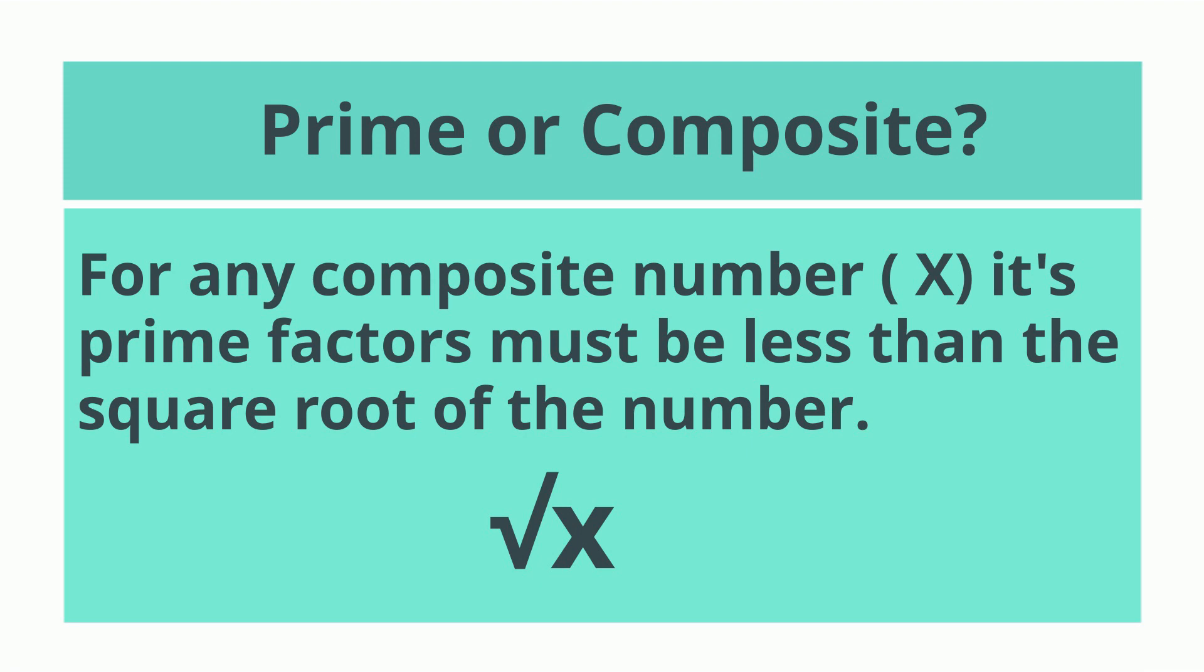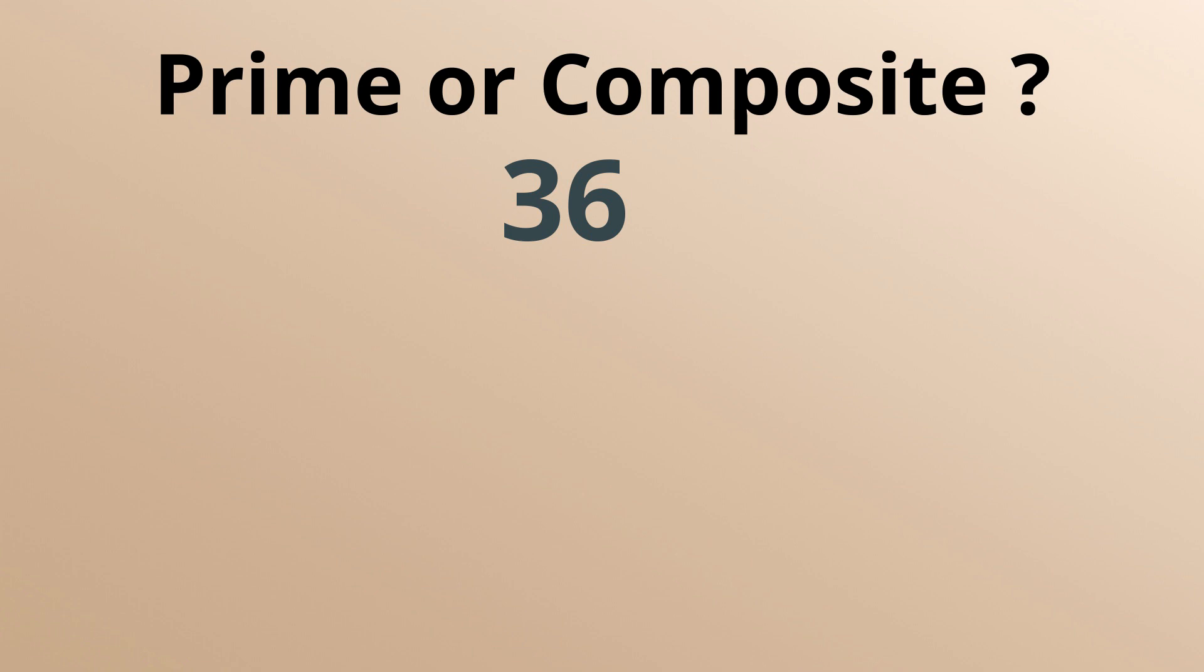So, for example, let's look at 36. Is it prime or composite? In order for 36 to be a composite number, it must be divisible by one of these prime numbers because the square root is 6.